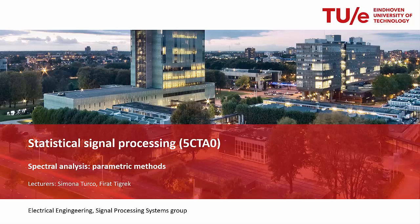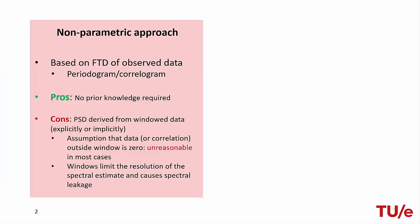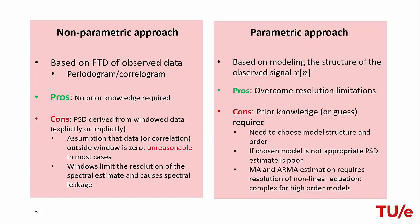Welcome to this screencast on the parametric approach to spectral estimation. In a previous screencast, we discussed non-parametric methods, which are based on the Fourier transform of either a segment of a signal or an estimate of its autocorrelation function. The advantage of such an approach is that it requires no prior knowledge on the data-generating process. However, since in practice the data is windowed, the spectral estimate suffers from spectral leakage and loss in resolution. We can overcome this limitation by using a parametric approach.